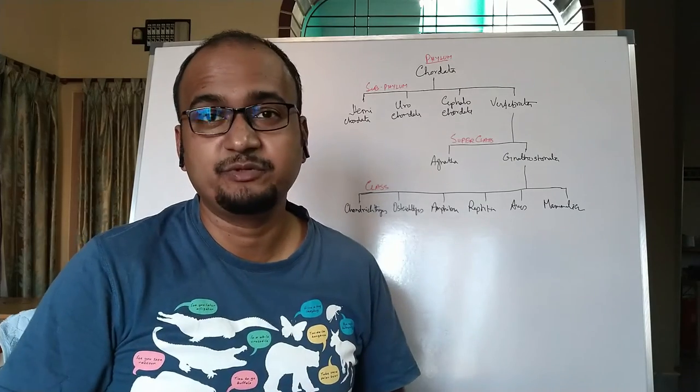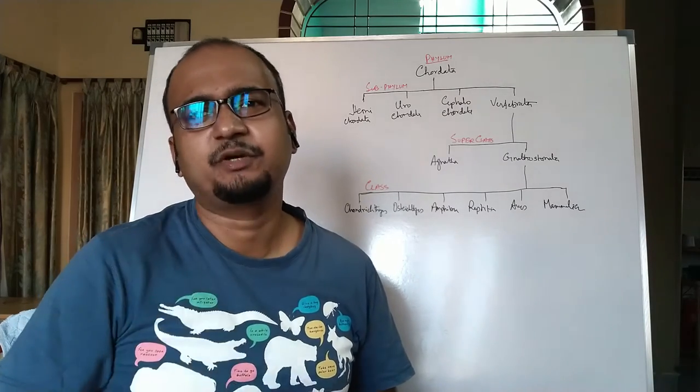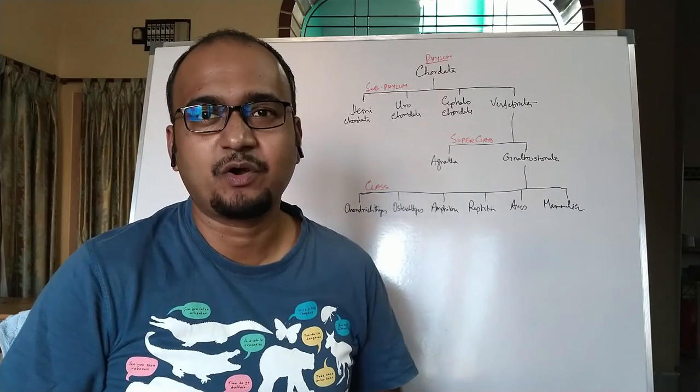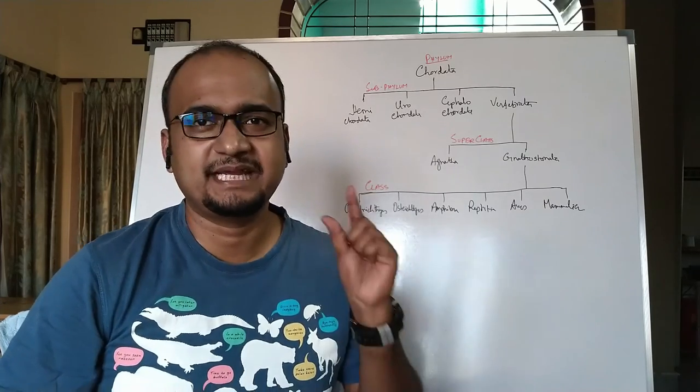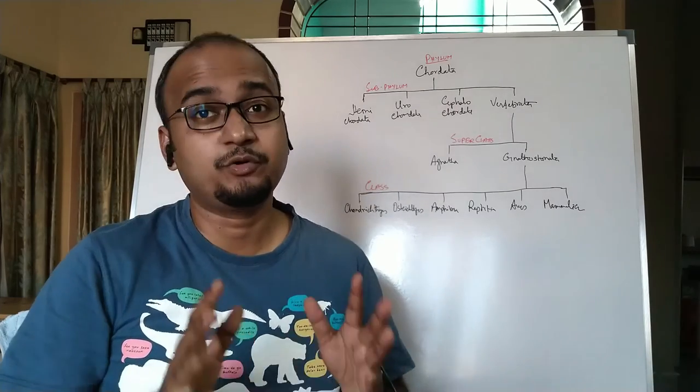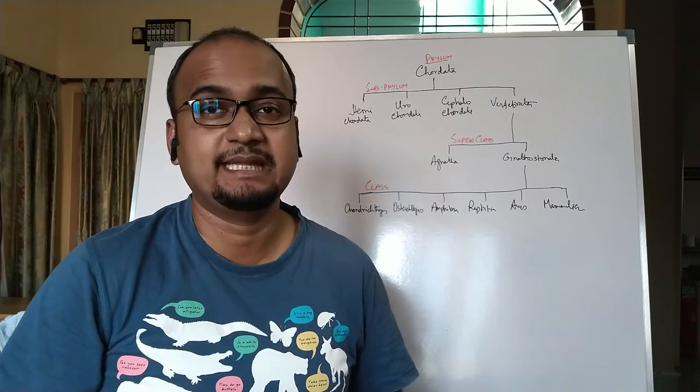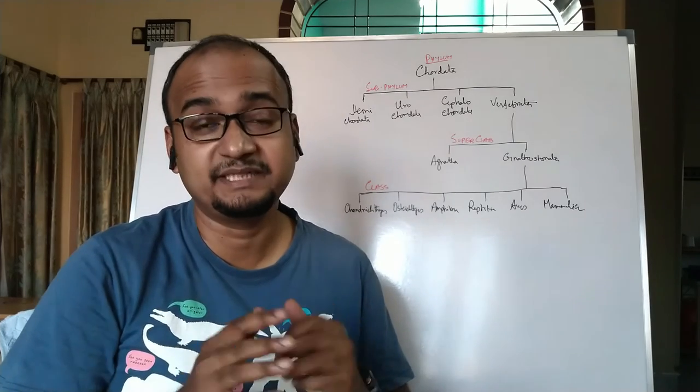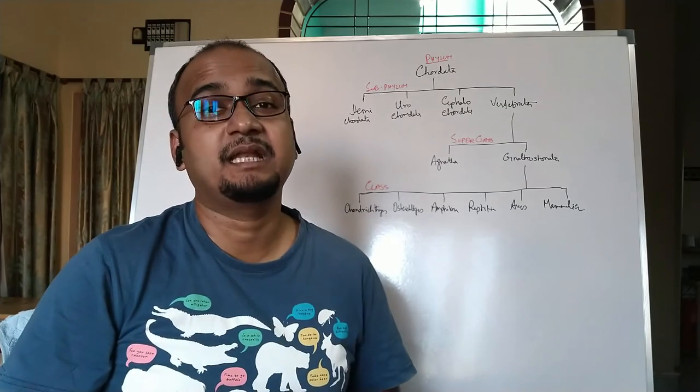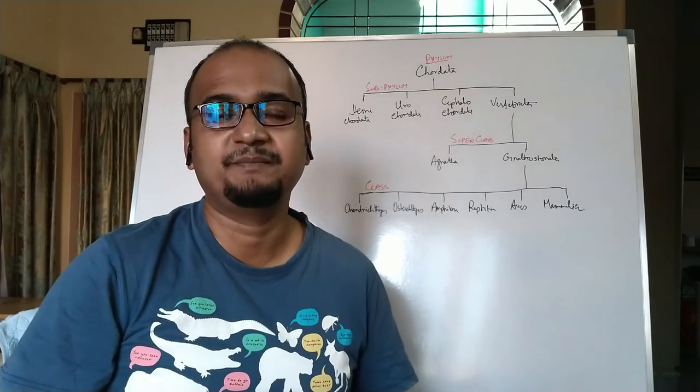Their body is covered by tunic or test which is composed of tunicin, and that's why this sub phylum is called Tunicata. Presence of specialized cells called vanadocytes which extract vanadium from seawater. Retrogressive metamorphosis can be seen in their life cycle. Notochord is present only in the larval tail, meaning their larval form is more developed than adults. Examples include Doliolum and Ascidia.